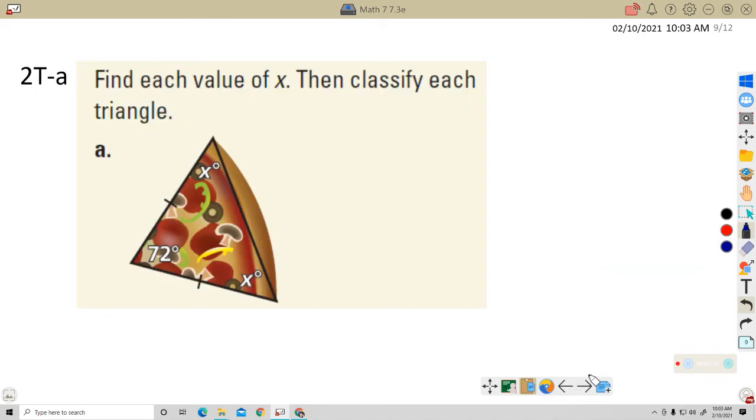Try this one. Look at that piece of pizza there. You have an x, an x, and a 72. You have these little lines here indicating equal sides. Go ahead and find the value here and then classify this triangle. And that's it for this video. I will see you in class when we get to this lesson. I'll talk to you guys later. Bye-bye.